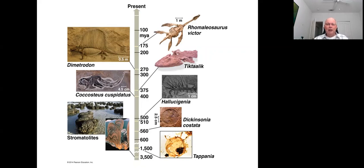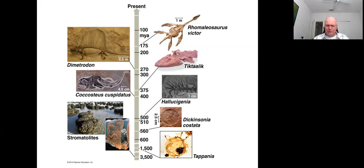We also saw the replica of a fossilized jellyfish showing radial symmetry. So we have side by side very early examples of animals showing both bilateral symmetry and radial symmetry.